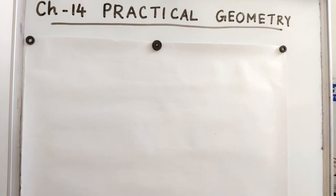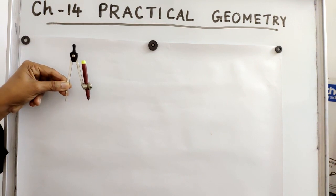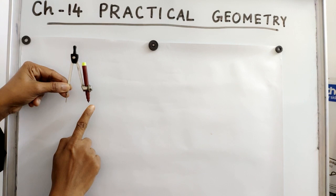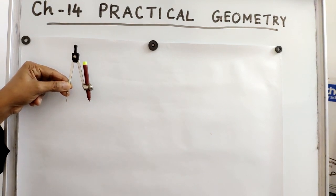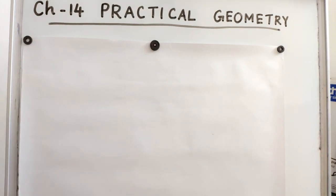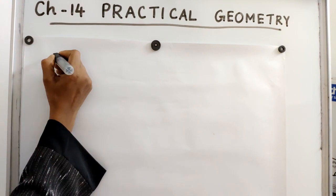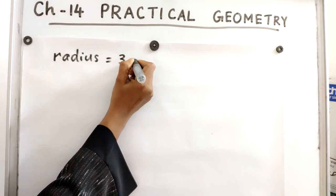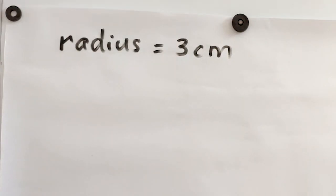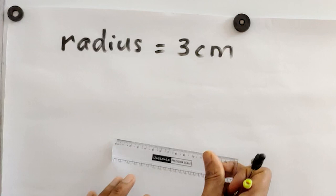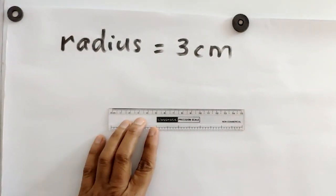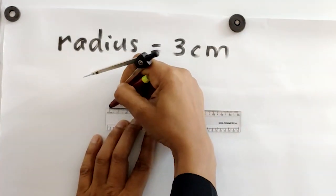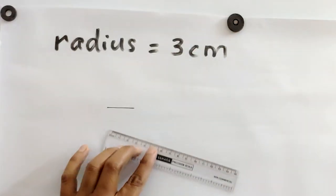Next, we are going to discuss about circles. We know that with the help of a compass only we can draw a circle. This is the metal tip of the compass and this is the pencil tip. Here I am using a sketch pen to draw. If the measurement of the radius is given, we can draw a circle.